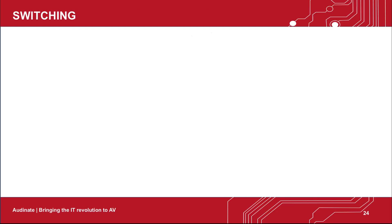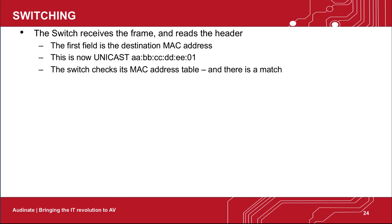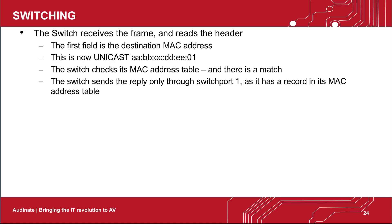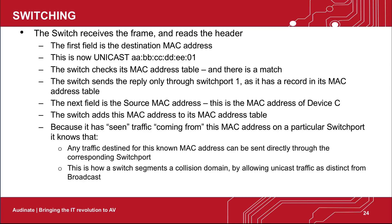Device C then sends the response. The switch receives the frame and reads the header. The first field is the destination MAC address — this is now unicast. The switch checks its MAC address table and sees a match, sending the reply only through switch port 1. The next field is the source MAC address — this is the MAC address of device C. The switch adds this MAC address to its MAC address table, because it has seen traffic coming from this MAC address on a particular switch port. This is how a switch segments a collision domain by allowing unicast as distinct from broadcast.